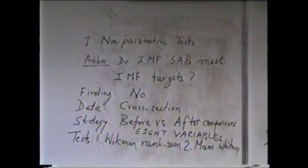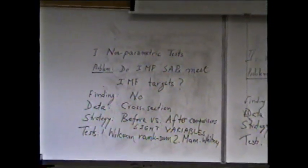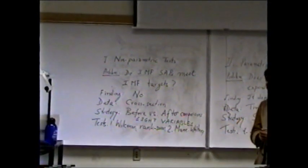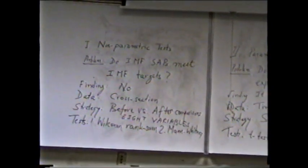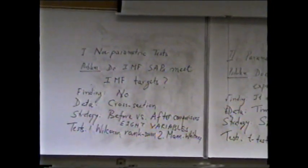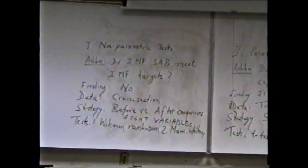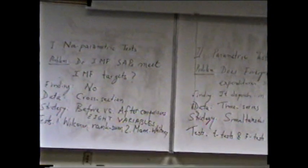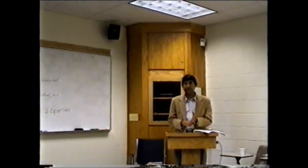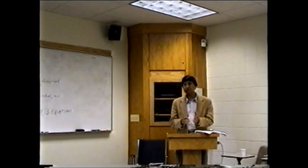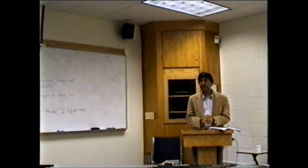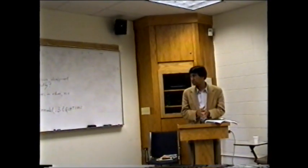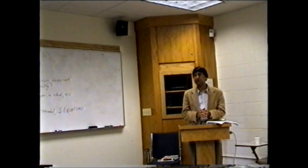Briefly, we chose a cross-section of countries for our data, and our strategy was to look at before versus after the policies and compare what happened. There are tests that can do this without assuming any distribution of the variables. We used two tests: the Wilcoxon rank-sum test and the Mann-Whitney test. Intuitively, they describe whether things move together, in the same direction, or in the opposite direction, and then there is a way to systematize these movements and derive specific conclusions with a certain level of significance.